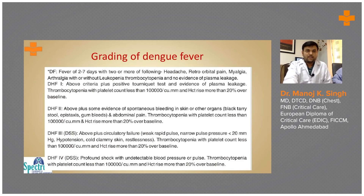To summarize: DHF type 1 presents with positive tourniquet test, type 2 with spontaneous bleeding, type 3 with circulatory failure having rapid narrow pulse pressure, and type 4 — dengue shock syndrome — presents with profound shock, undetectable blood pressure, and undetectable pulse.